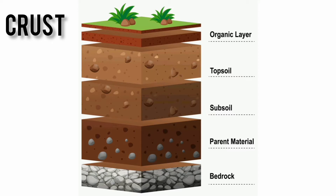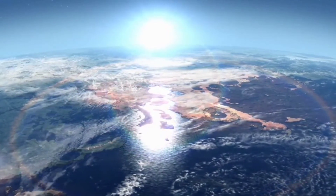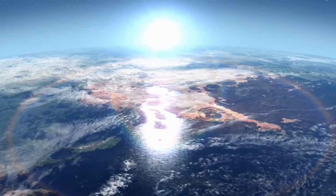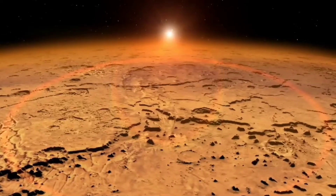Crust. The crust is the outermost layer of the Earth. It is made of solid rocks, green fertile land, and water. This part has lighter elements like silicon, oxygen, and aluminum. Because of this, it is known as SIAL.